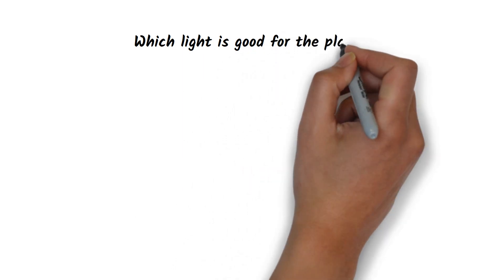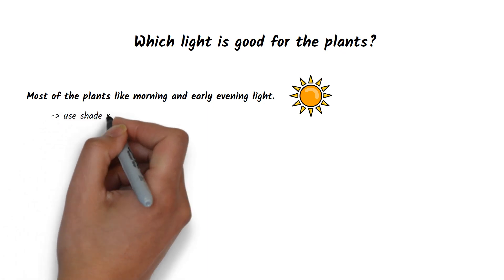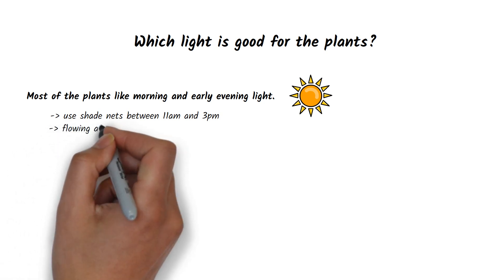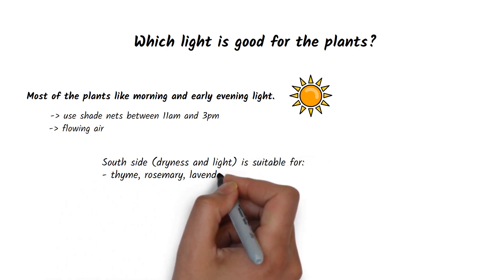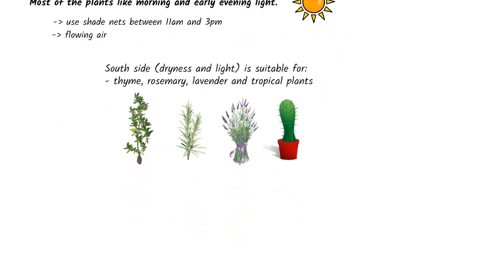What about the light? Plants enjoy morning and early evening light. If your plants are exposed to the sun directly between 11am and 3pm, use shade nets. However, make sure that there is always air flow around the plants. Thyme, rosemary, lavender and tropical plants that like dryness and light prosper on the south side of the house.